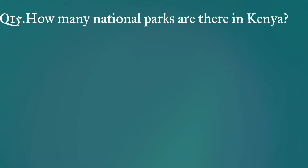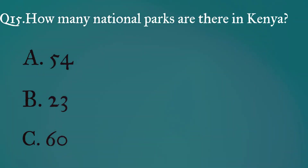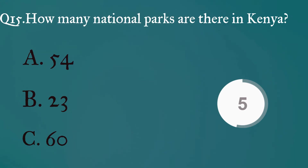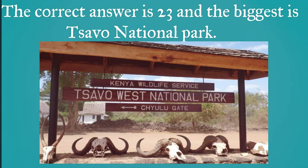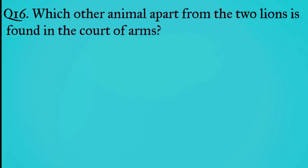Question 15: How many national parks are there in Kenya? A: 54, B: 23, C: 60. The correct answer is 23, and the biggest is Tsavo National Park.